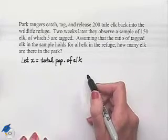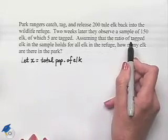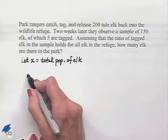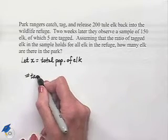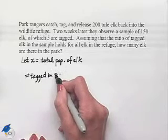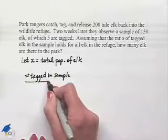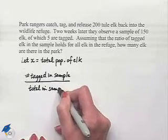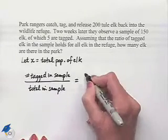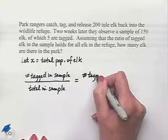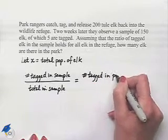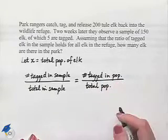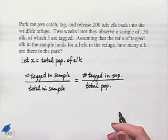Now, we're told that we have a ratio of tagged elk, and that ratio is going to be the same as the ratio for all elk in the refuge. We'll look at the number tagged in the sample, divided by the total in the sample, and we want this to equal the ratio of the number tagged in the population divided by the total population. Using this information, let's figure out how to set up our proportion.